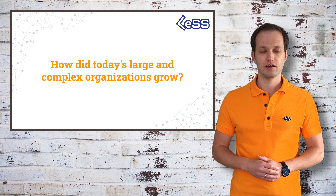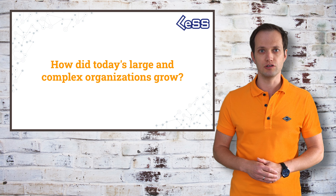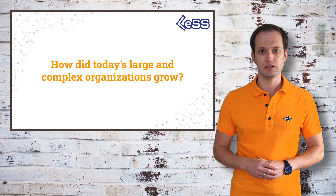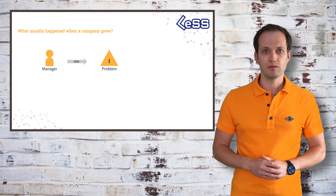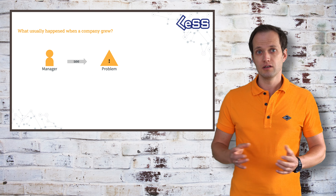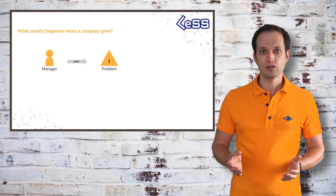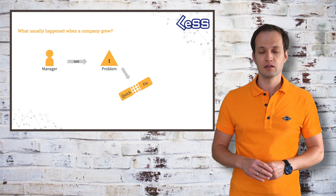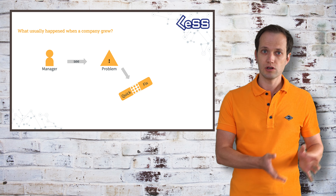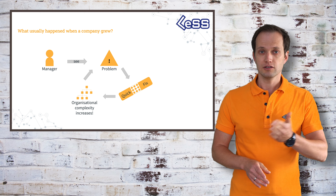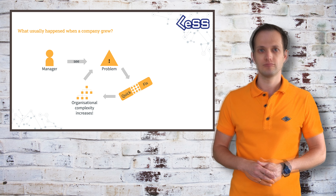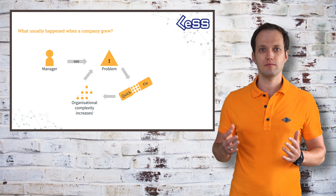Let's discuss how today's big and established organizations grew over time and how their complexity increased. It starts with managers observing a problem. The problem needs to be solved. They apply a quick fix, which usually leads to another problem. And the cycle continues all the time.